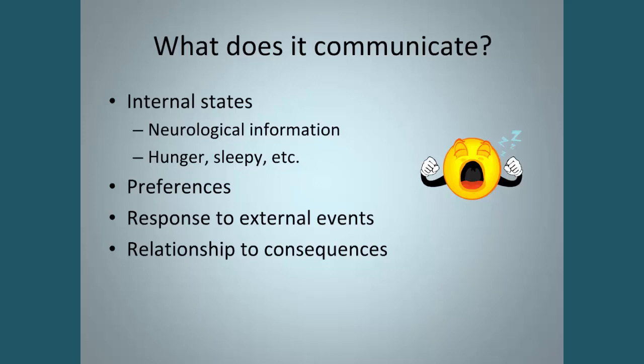Behavior can communicate so many different things, so we have to be a really good observer and a neutral observer to figure out what it is communicating. It can be tied to their internal state — something that's happening neurologically in their body. It can be tied to hunger, sleepiness, or other internal states. It can relate to preferences — something that they like or don't like. It can be a response to external events, something that happened that they really want to do or really don't like. Or it can relate to consequences happening within their environment.